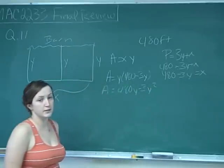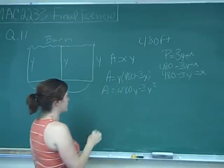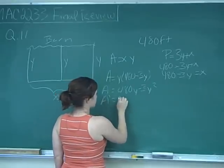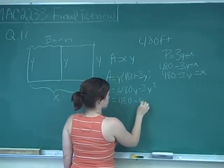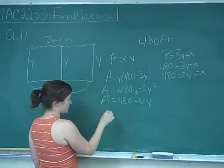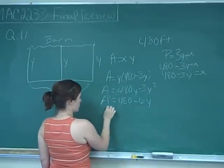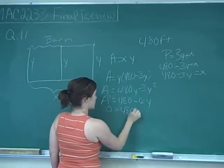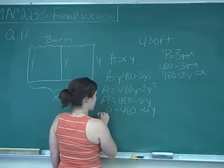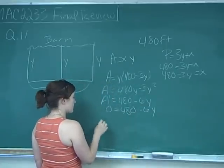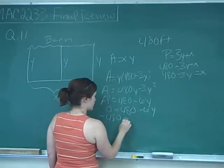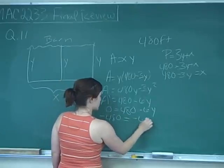Since we want to maximize the area, we take the derivative: A prime equals 480 minus 6y. Setting this equal to zero, we get 0 equals 480 minus 6y, then subtract 480 to get negative 480 equals negative 6y.